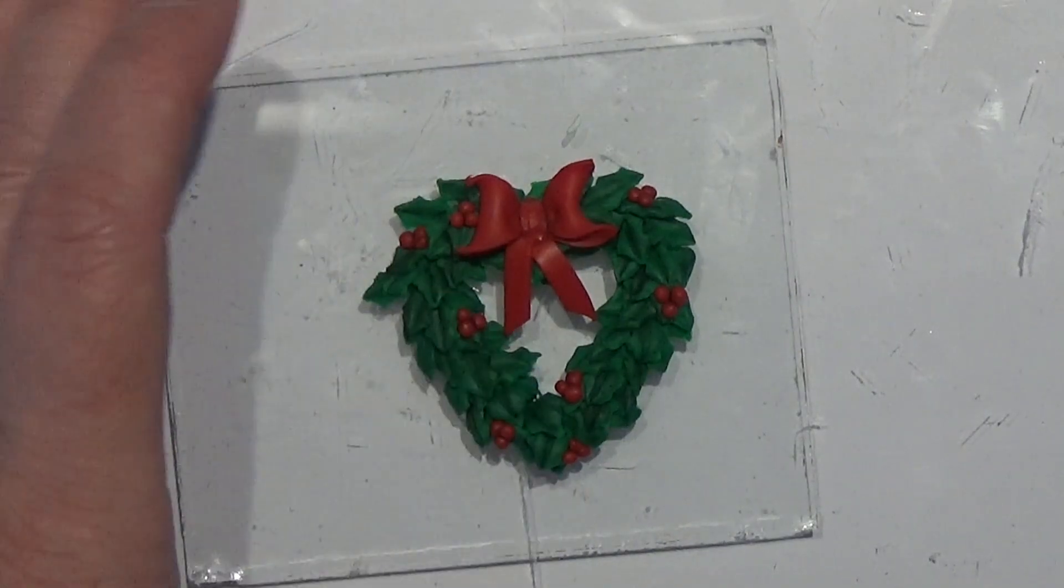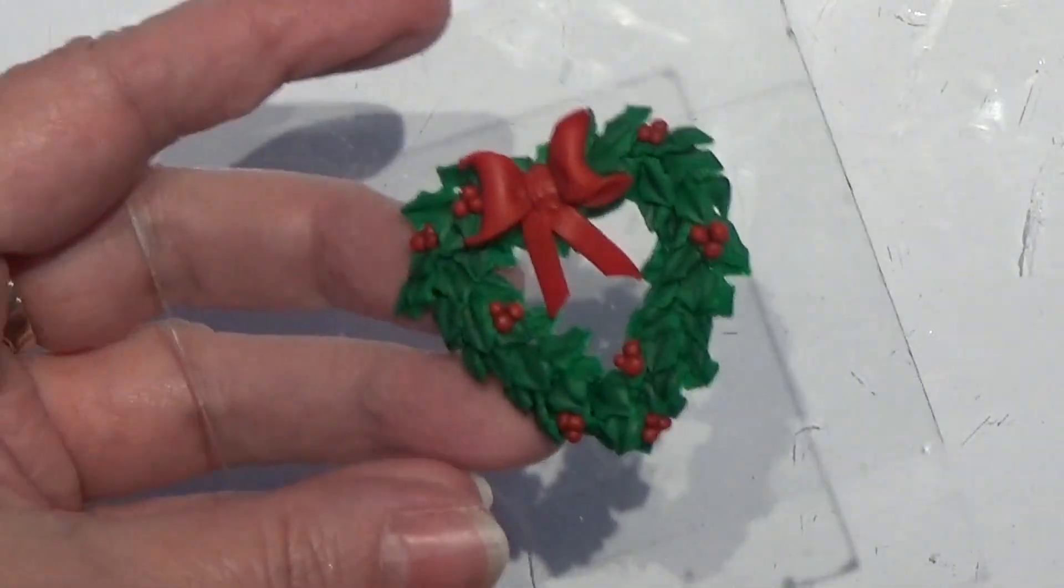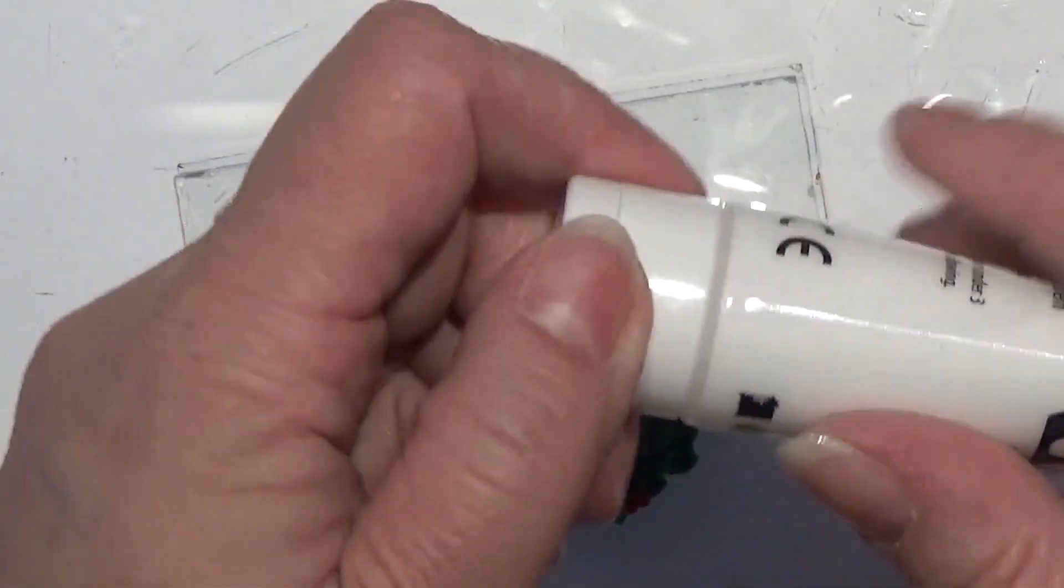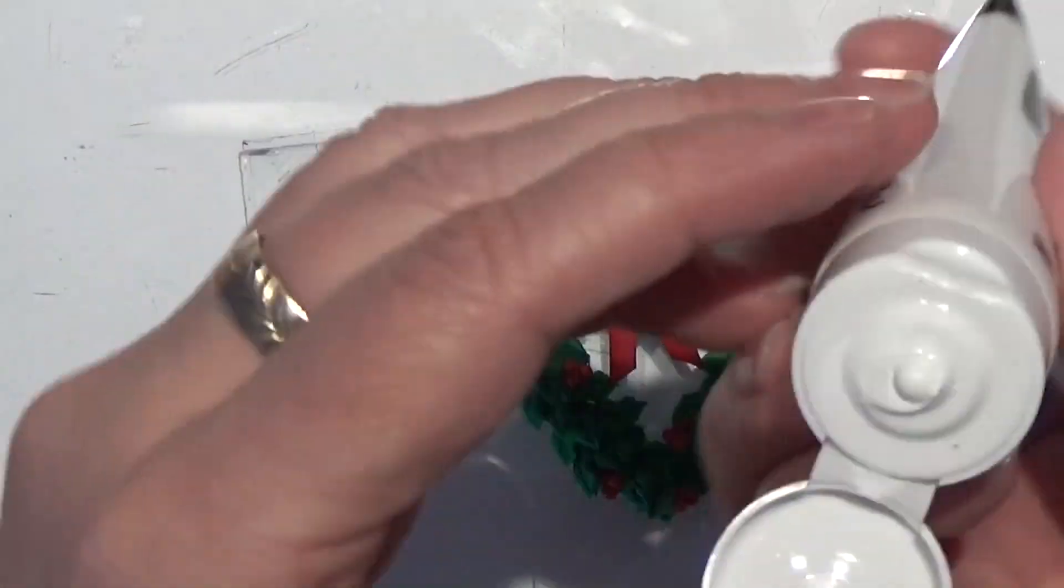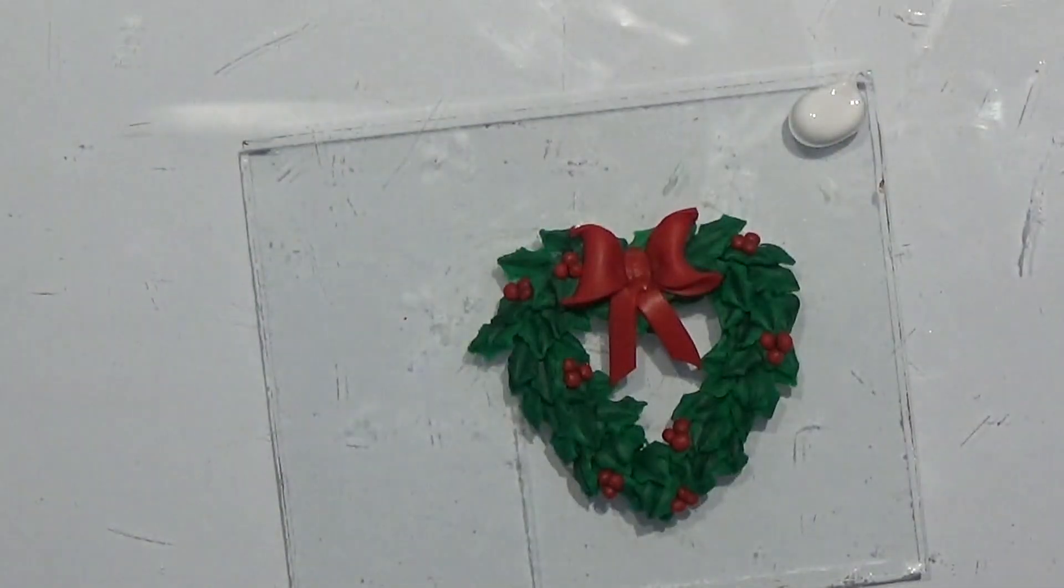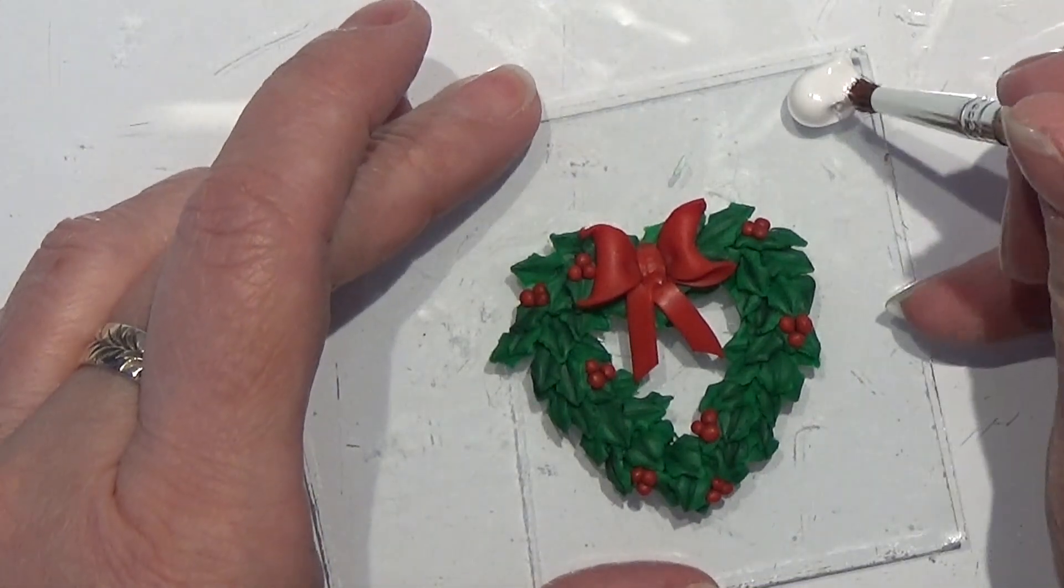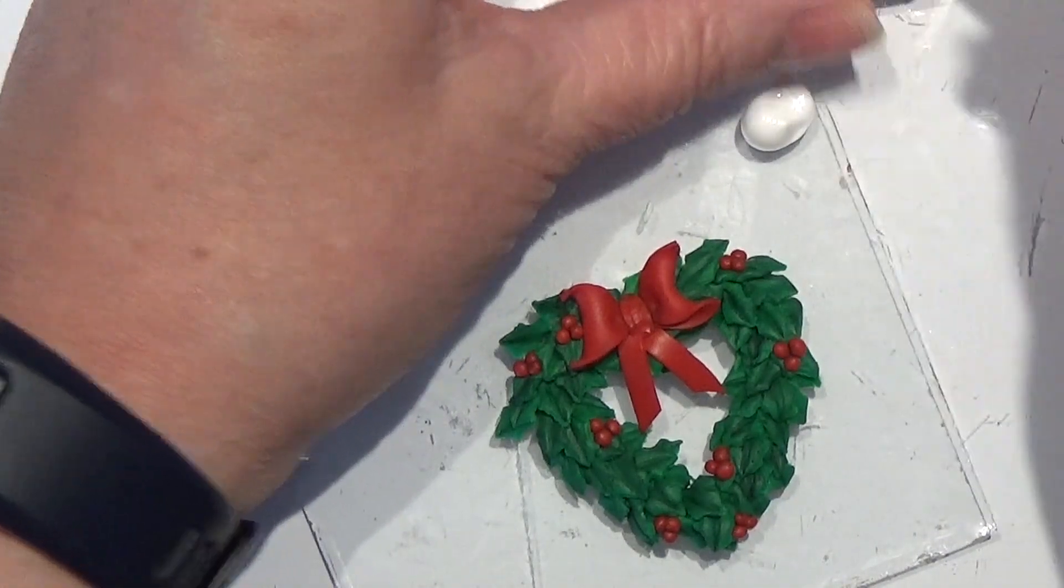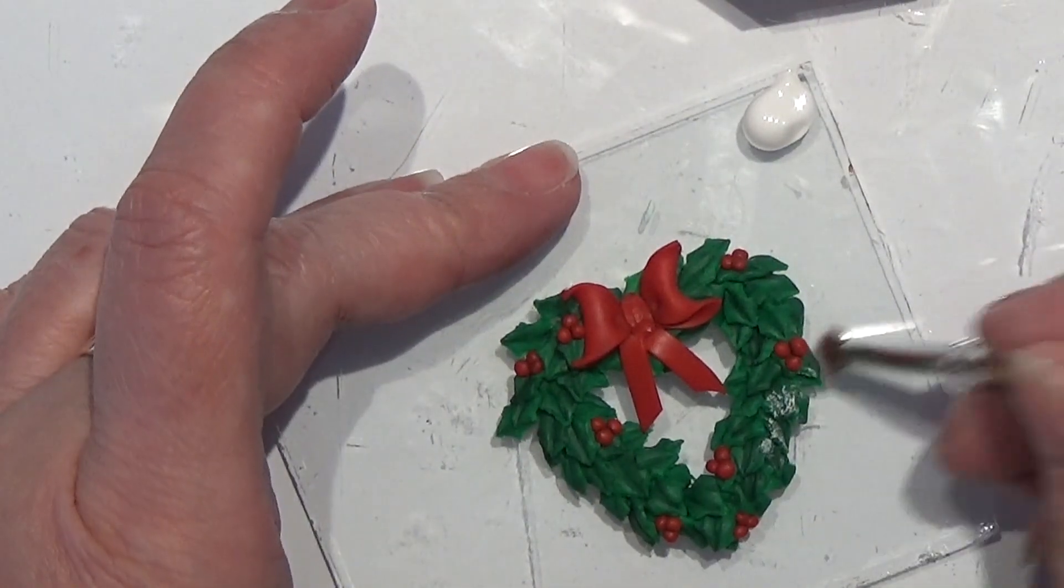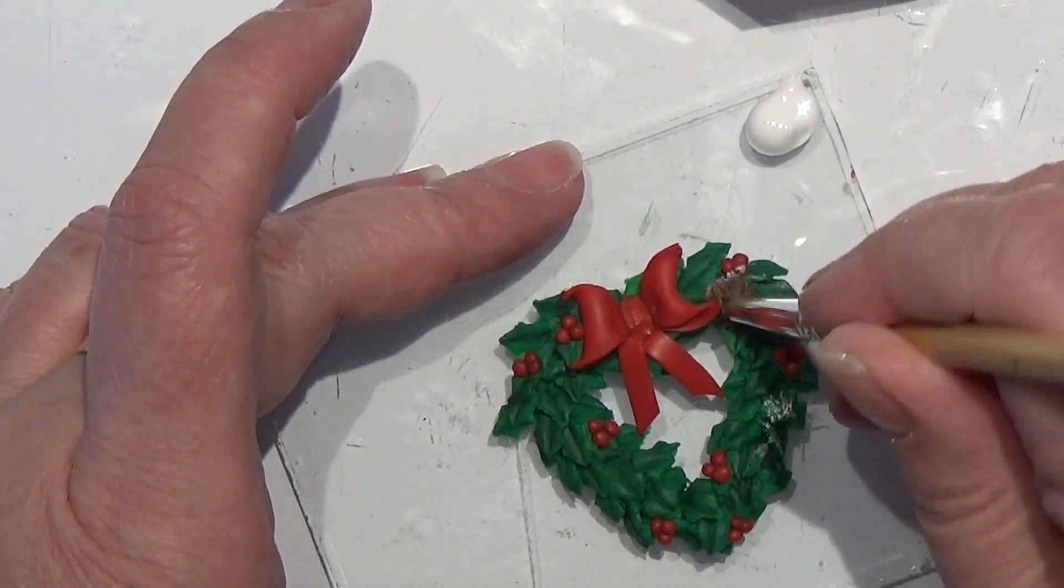So my wreath has dried now. I can either leave it like this or I can make a little highlights on it. I am going to make a tiny highlight or a little highlight. So I'm just going to take a tiny bit of white acrylic paint and I'm going to dry brush on here.